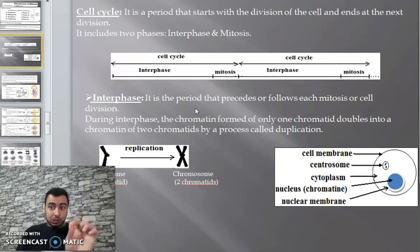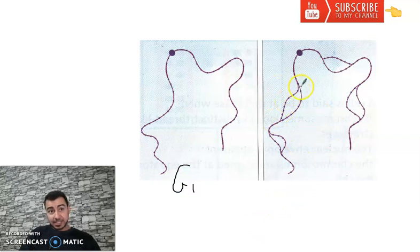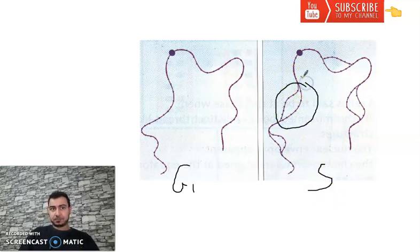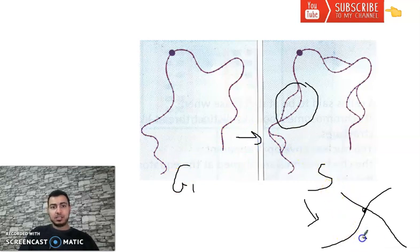Let's see the shape of the chromosome during G1 and during S phase of interphase. This is the chromosome during G1. During S phase, the chromosomes or chromatin are duplicating. At G2, the chromatin becomes two chromatids — duplicated. This is the structure of chromosome or chromatin during G1, then S, then G2 of interphase.